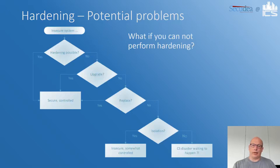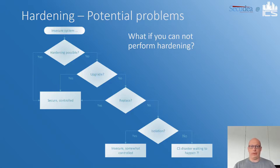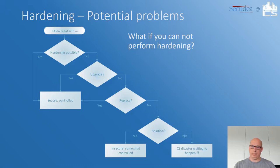Here's a flow chart for potential problems during hardening. If you cannot perform hardening, you have an insecure system. First, check if you can do an upgrade. If yes, you end up with a secure control system. If you cannot upgrade, look at whether you can replace it. If you cannot replace it, investigate if you can isolate the system. But if you cannot do any of those — no hardening, no upgrading, no replacing, no isolation — then a lot of things can go wrong.